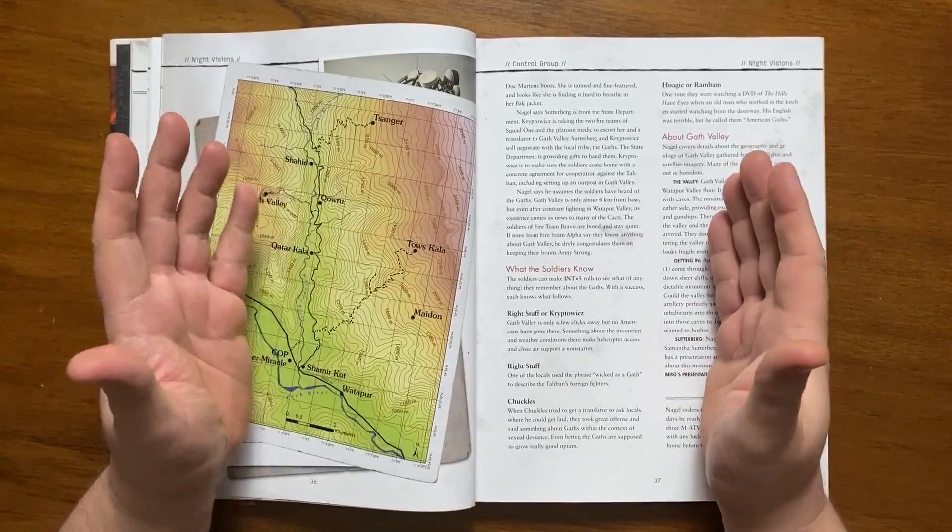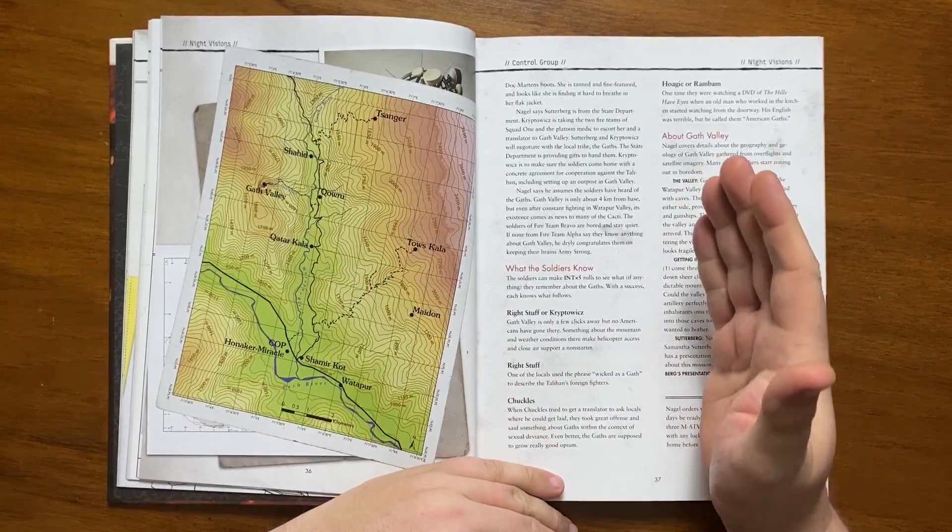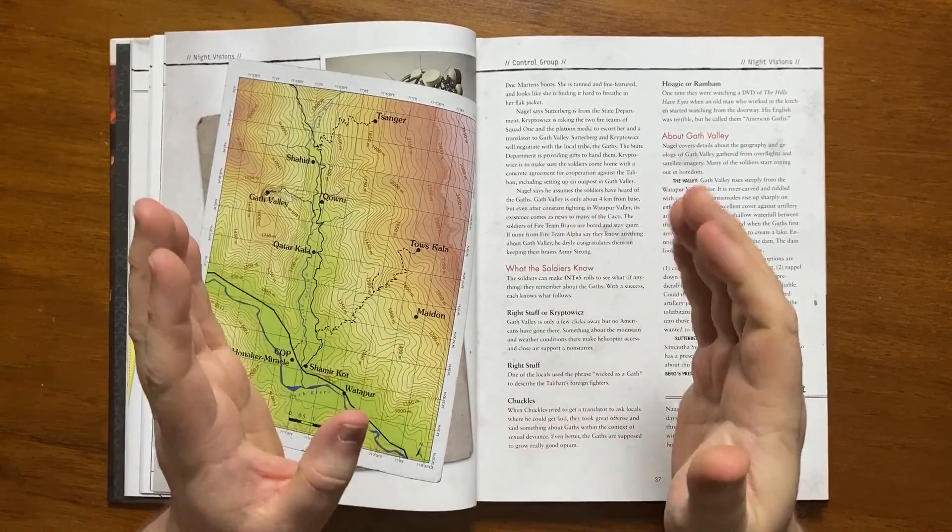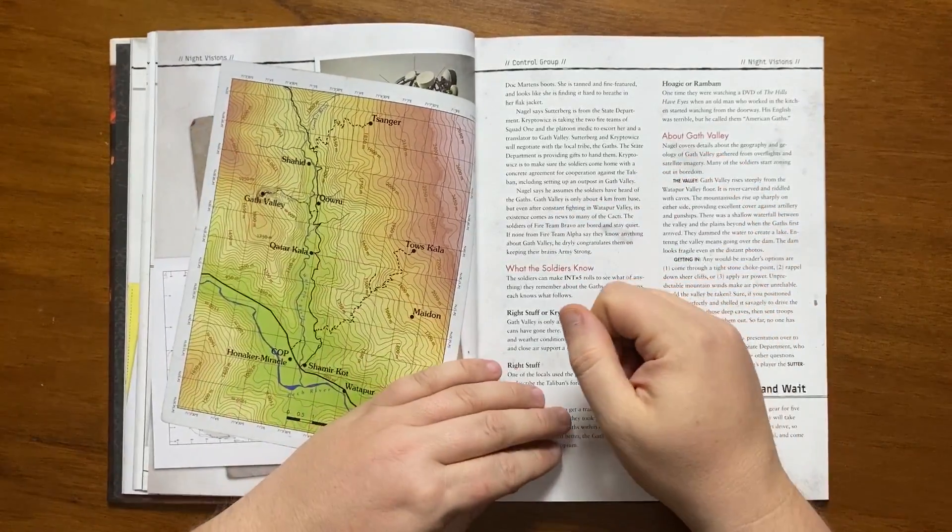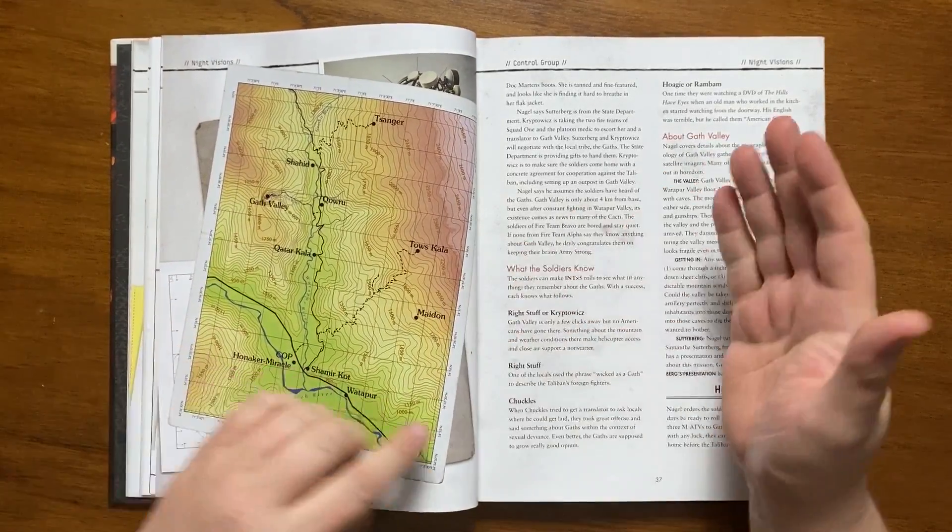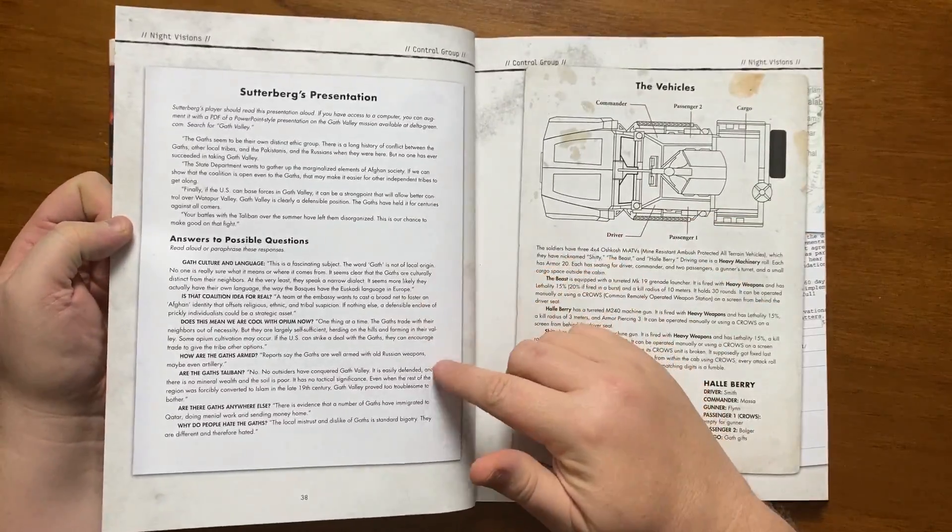Nagel explains that she is from the State Department and that Kryptowicz is to take her and a translator along with the platoon medic to a place called Gath Valley. There, Sutterberg and Kryptowicz are to negotiate with the local tribe, the Gaths. They are to deliver gifts for them with the hope of coming home with a concrete agreement for cooperation against the Taliban and promise of being able to build an outpost there. Gath Valley is only 4km from their base, though they have not heard of it. Sutterberg gives a presentation along these lines, and there are a list of potential questions and answers given on the next page.